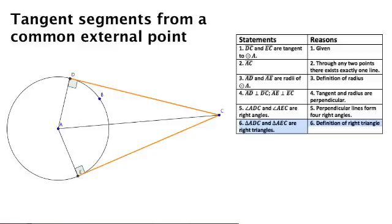And since we know that all radii of a common circle are congruent, that means that these segments are congruent.